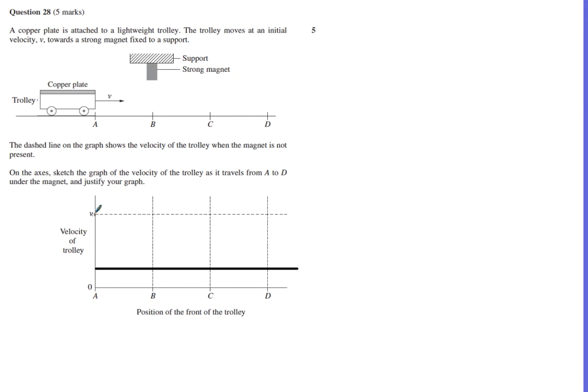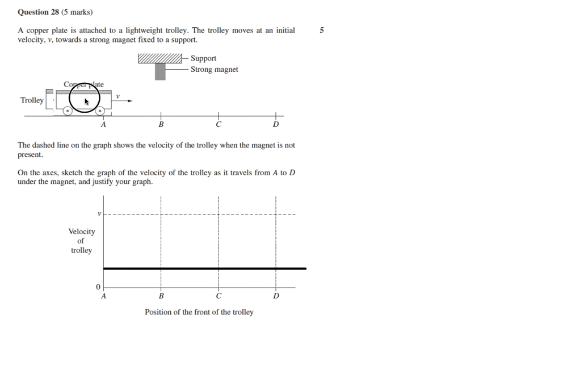The question is what happens to the graph as it goes from there to there. Let's look at that. First and foremost, what happens as the trolley starts to approach B? Initially at B, you would understand that we have the production of eddy currents.